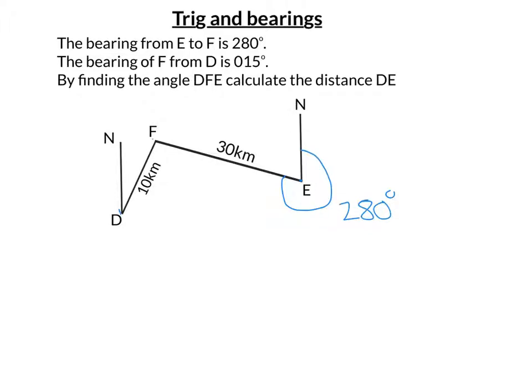So there's D and that's F. So start at north, go clockwise. So that was 0, 15, a bearing. So that angle there is 15. And it would like me to work out this distance here.